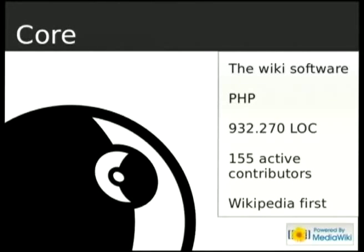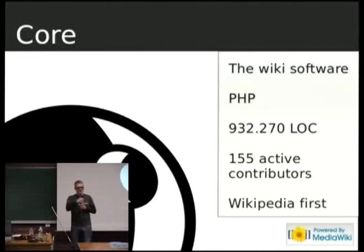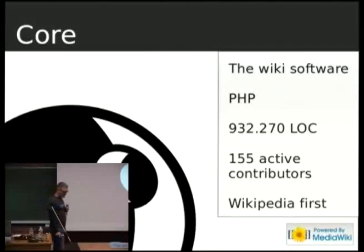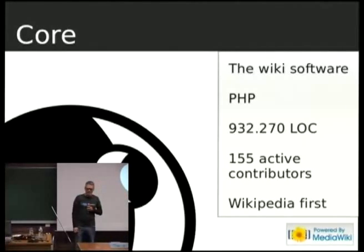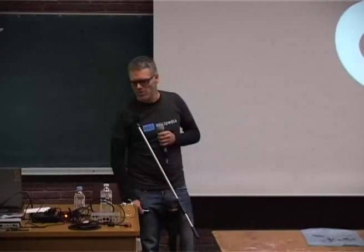Finally, we go to the MediaWiki core — the software that provides the wiki in Wikipedia. Well, it's quite a beast. It's big. I would recommend you to start first with extensions or something before you get there. But in any case, there are about 155 active contributors. This was developed for Wikipedia, and still nowadays the primary focus is Wikipedia — the fresh versions target Wikipedia first. If you're breaking something, you'll probably see it breaking in Wikipedia first. This defines a lot the release process of MediaWiki. But there are people involved with many different interests and organizations, so you are also welcome to join.